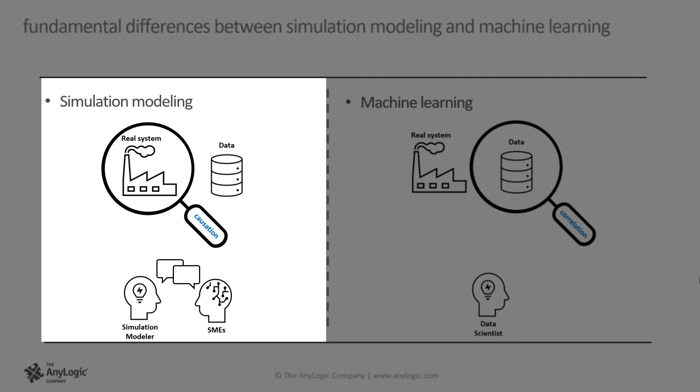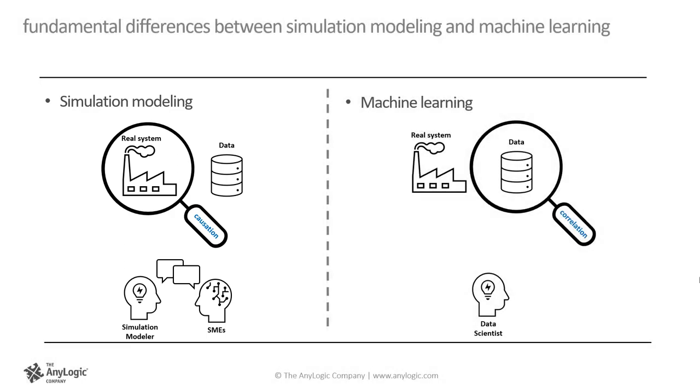Simulation models can also use data as inputs or to approximate some aspects of the model. When data is used as inputs, it's for aspects that are exogenous to the main focus of the model, such as arrival rates. Data can be used as approximation for components that are hard to model with the first principle, such as the amount of time it takes for a forklift to move a palette. Due to hidden or complex causal mechanisms, it is very common that these values have random variations and are thus represented in the model using probability distributions.